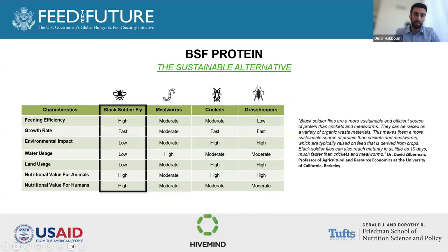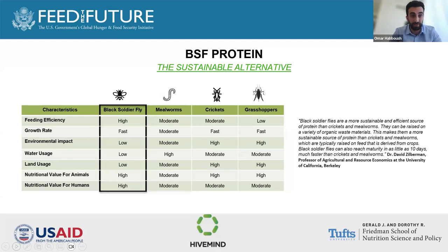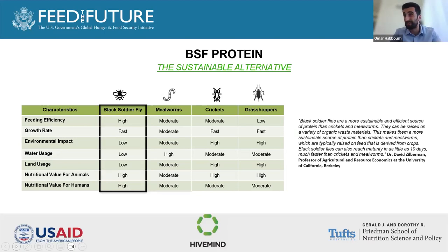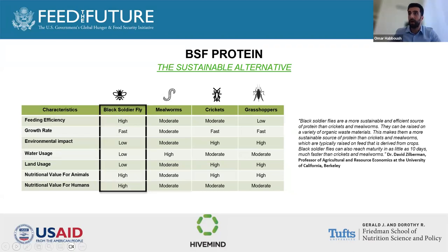When we first looked at this, we compared black soldier flies, mealworms, crickets, and grasshoppers. On pretty much every aspect, the black soldier fly comes out on top: higher feeding efficiency, much faster growth rates, lower environmental impact, lower use of water — about 10 times less water than mealworms and crickets — 10 times less land use, higher nutritional values for animals, and also safer and higher nutritional values for humans as well.